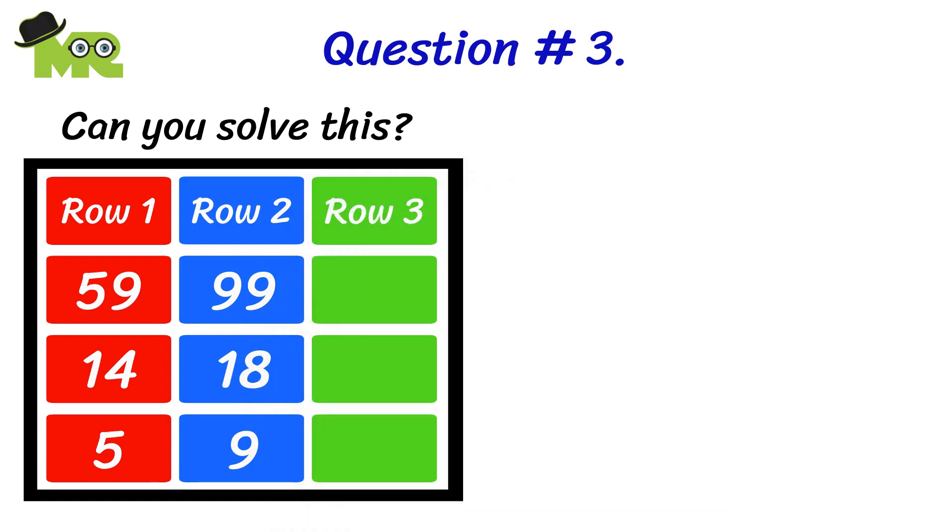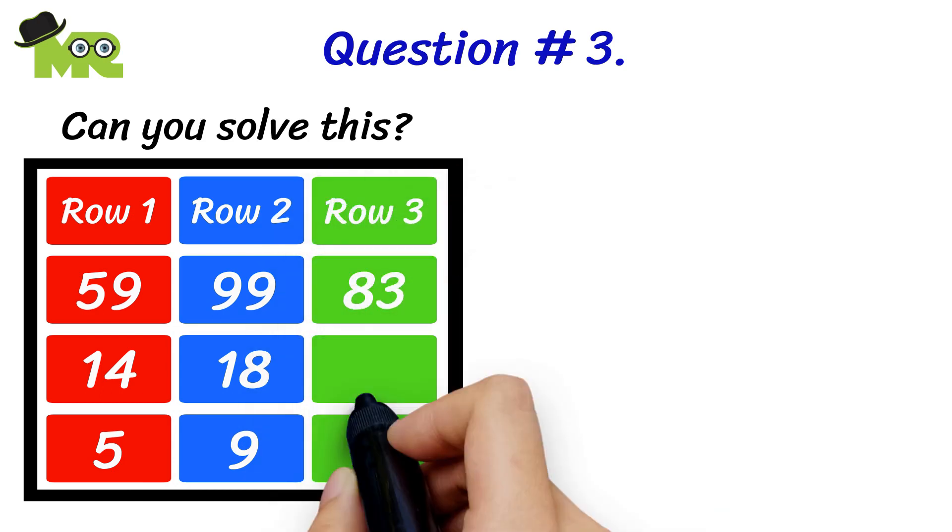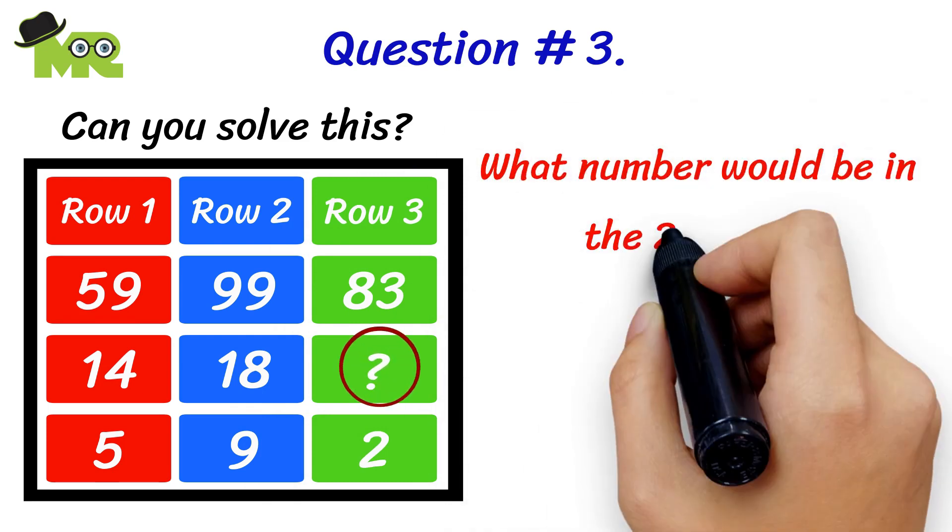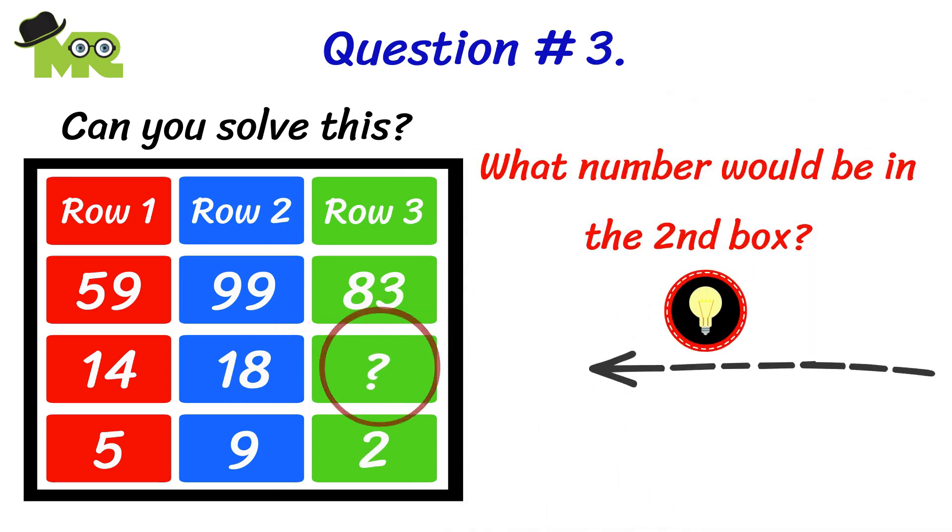In row three, the first box has the number 83, the third box has the number 2. One number would be in the second box. Don't overthink it, the answer is apparent.